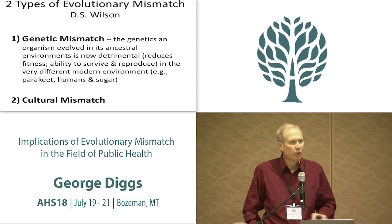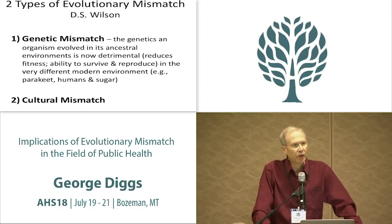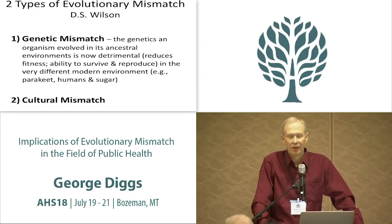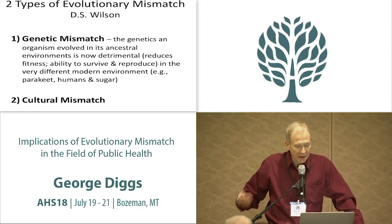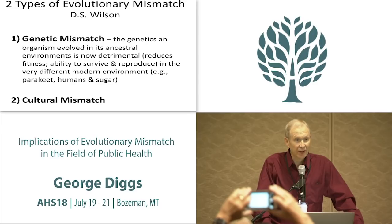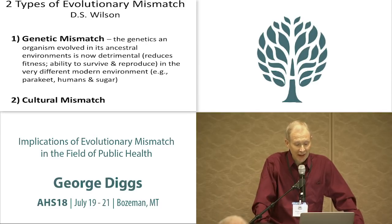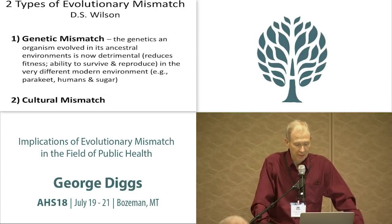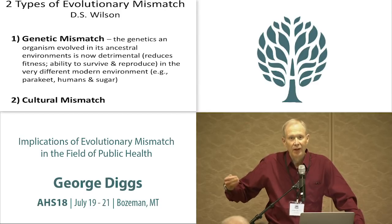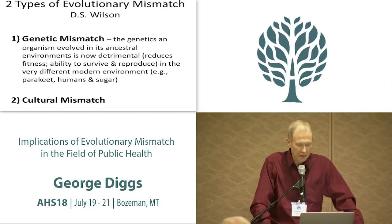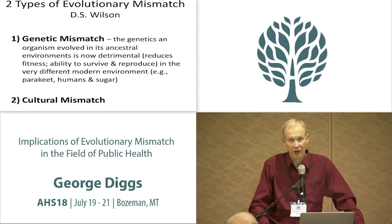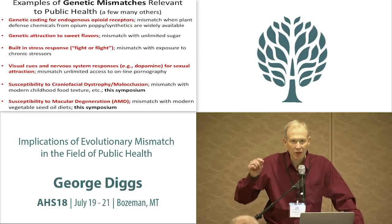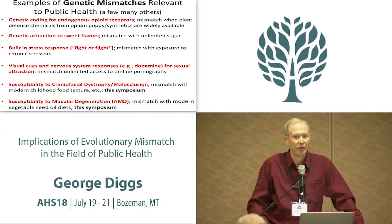David Sloan Wilson has divided evolutionary mismatch into two types. The kind we're all familiar with is genetic mismatch — where the genetics an organism evolved in its ancestral environments are now detrimental, reducing fitness, survival, and reproduction in very different modern environments. But there's another concept called cultural mismatch, which I'll define in a moment. First I want to spend a minute on some genetic mismatches I try to convey to my students.